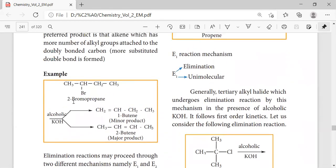With 2-bromopropane, on treatment with alcoholic KOH, one hydrogen from this is removed and a CH2 double bond forms. We get the minor product as 1-butene and the major product is 2-butene.